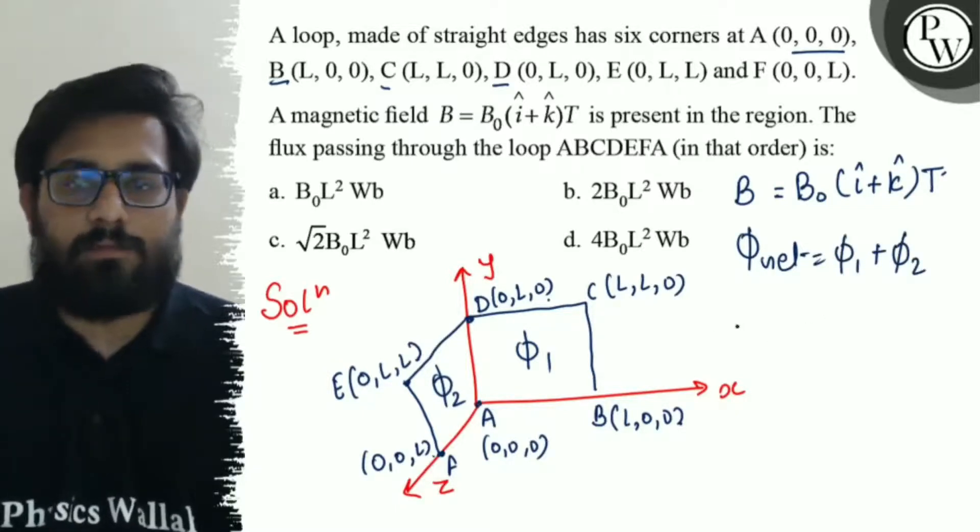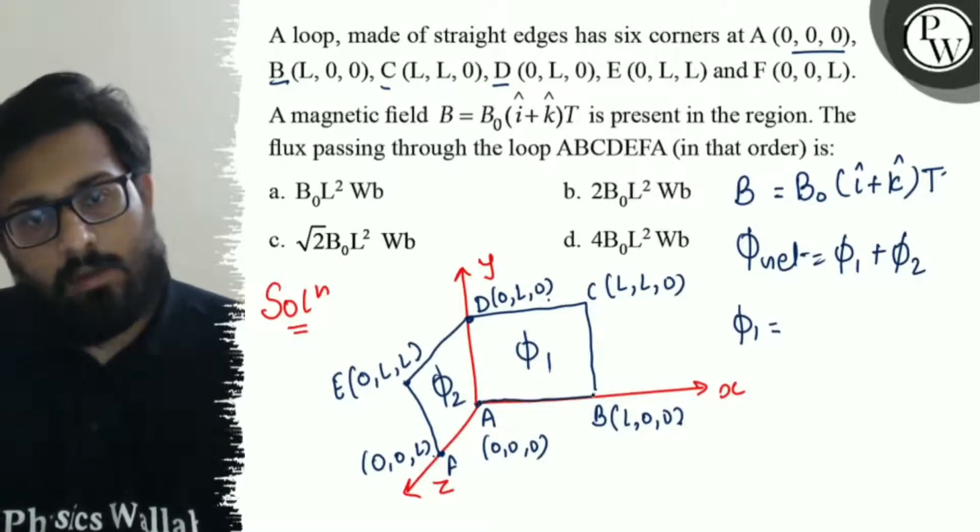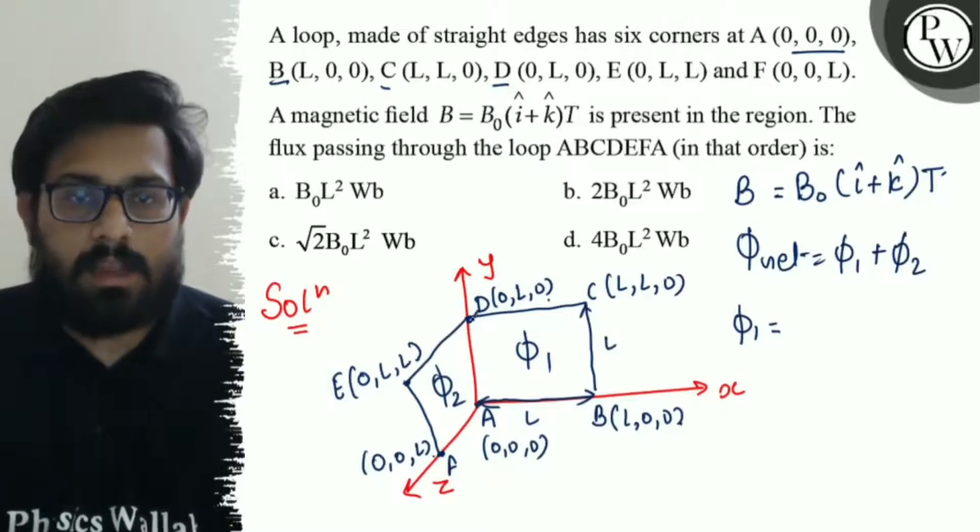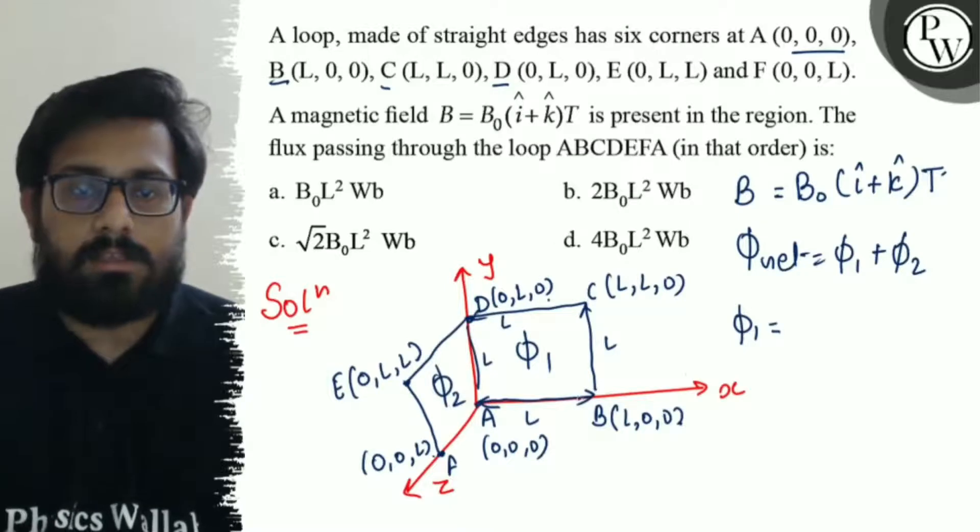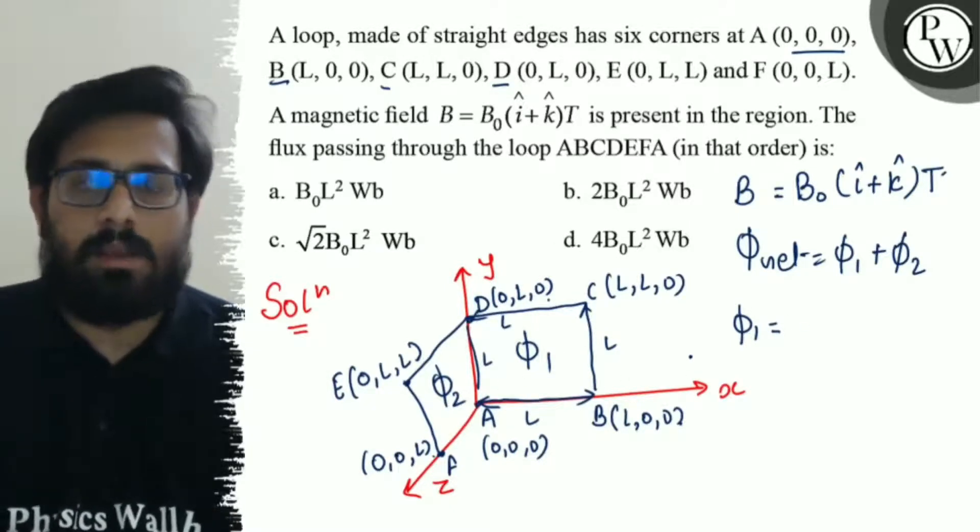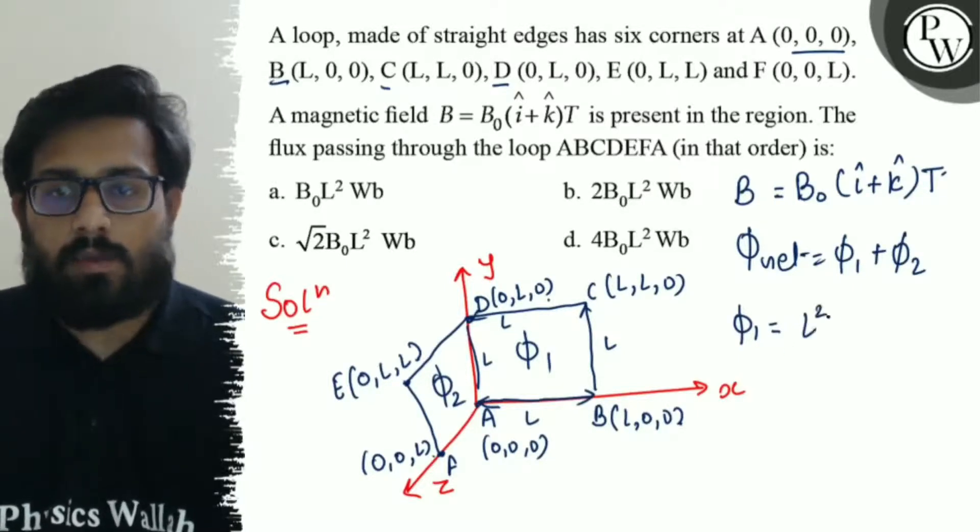So, let us calculate the value of phi 1 first. So, phi 1 is equals to nothing but area, which is L square. So, as you can see, the value here is L. This is again L. This is again L. And this is again L. So, this is a square and having the area of L L square and the direction is here along the positive Z axis. So, phi 1 can be written as L square K cap dot. This is the value of area.